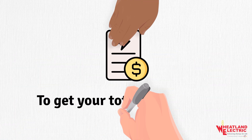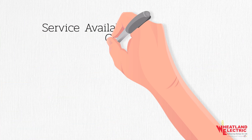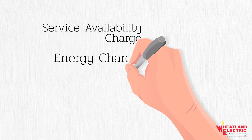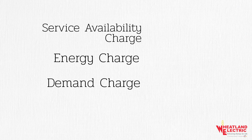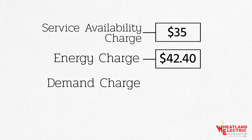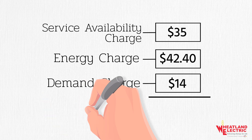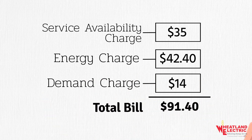To get your total electric bill, simply add the service availability charge, energy charge, and demand charge together. For instance, if your service availability charge is $35.00, your energy charge is $42.40, and your demand charge is $14.00, your total bill is $91.40 plus taxes and adjustments.